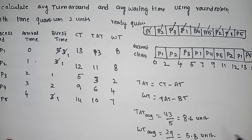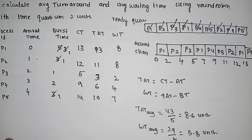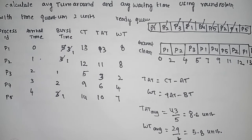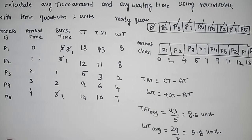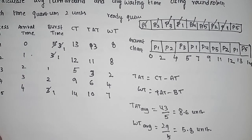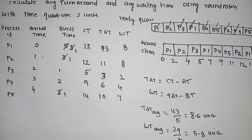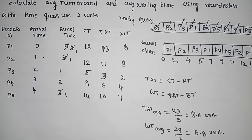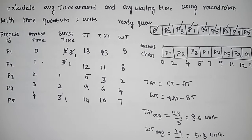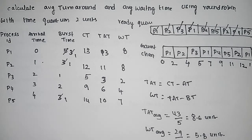This is the average waiting time and average turnaround time for round robin scheduling. We used a ready queue, Gantt chart, and calculated average waiting and average turnaround time. This is the time slice concept. Please subscribe to my channel and share with your friends. Thank you for watching.